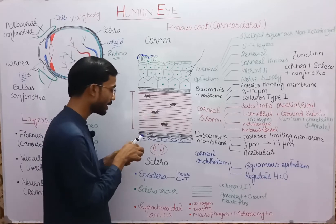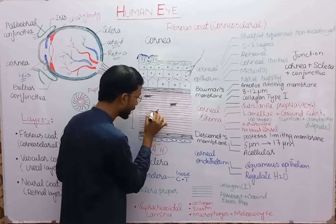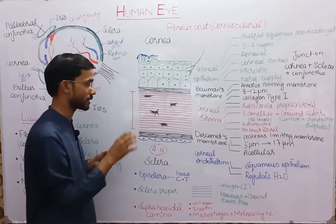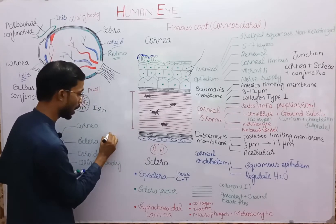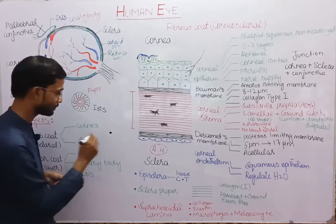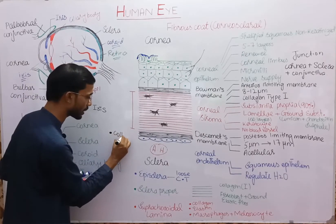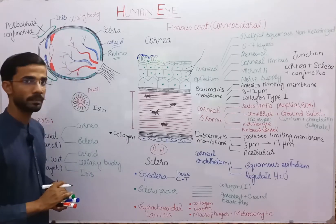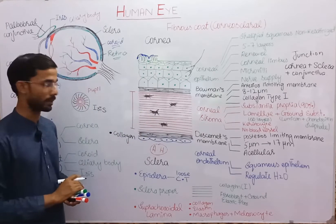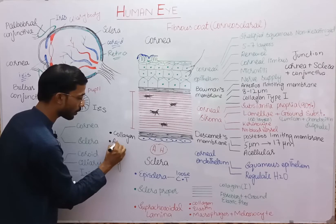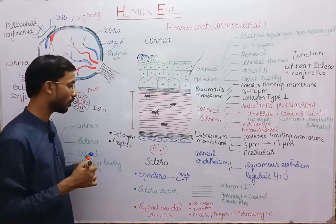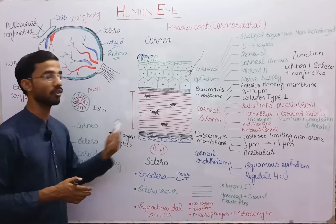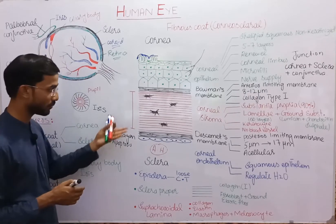Keratocytes have different projections that cross different collagen layers. They are involved in two functions: first, formation and maintenance of collagen fibers; and second, apoptosis — these cells secrete enzymes involved in the degradation of different components.